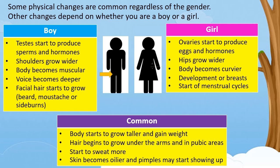For the common physical changes of both boys and girls: first, the body starts to grow taller and gain weight; hair begins to grow under the arms and in pubic areas; you start to sweat more; and finally, skin becomes oilier and pimples may start showing up.